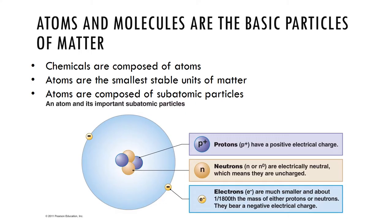Atoms and molecules are the basic components of matter. Chemicals are composed of atoms, and atoms are the smallest stable units of matter. Atoms are composed of subatomic particles. The nucleus consists of neutrons and protons. A neutron has no charge, a proton has a positive charge, and electrons orbit the nucleus with a negative charge.